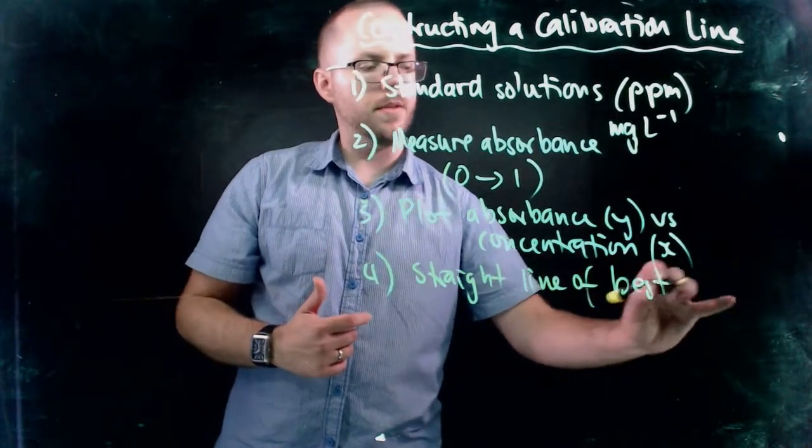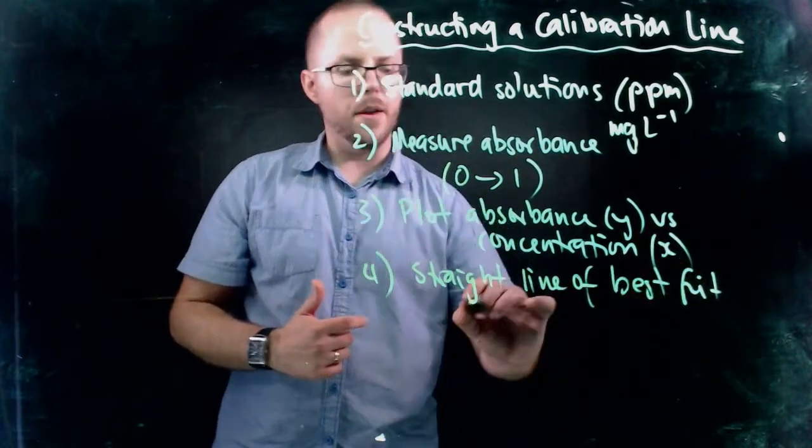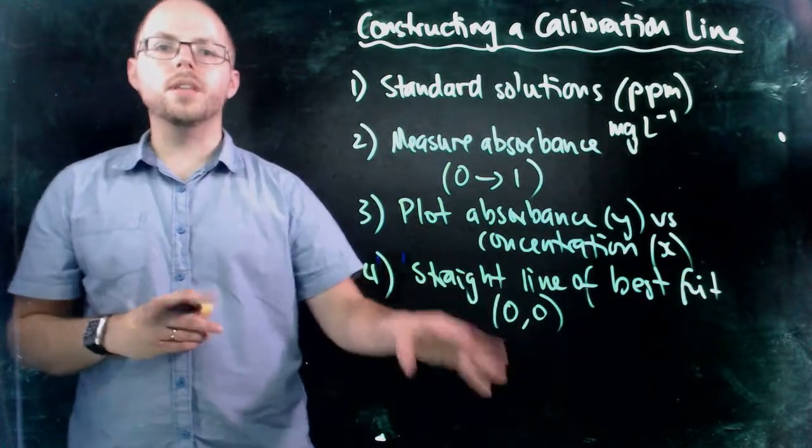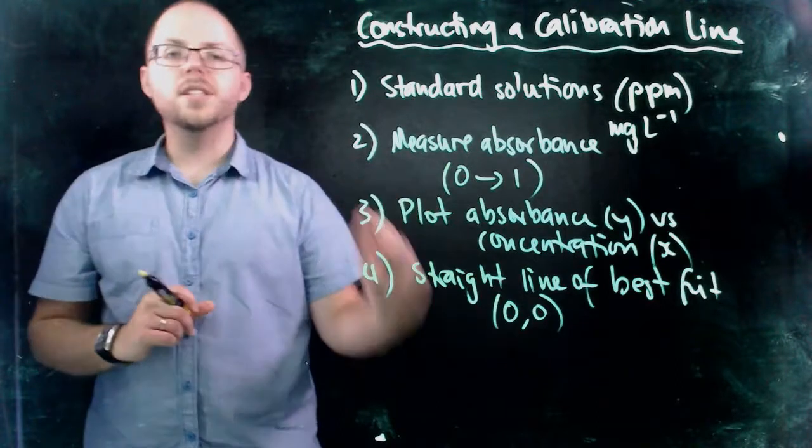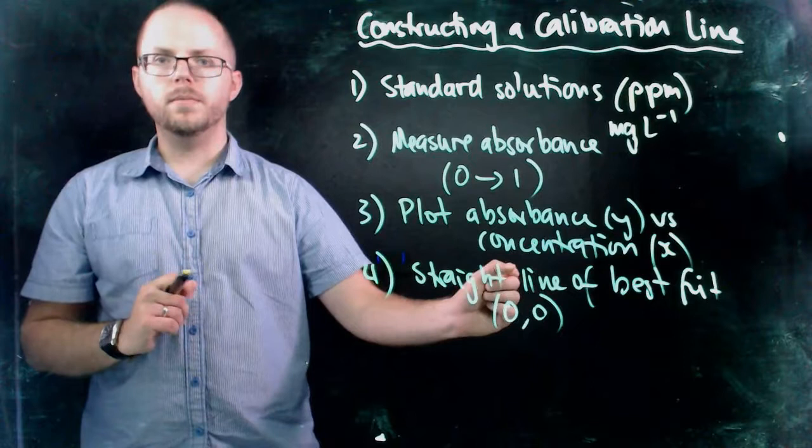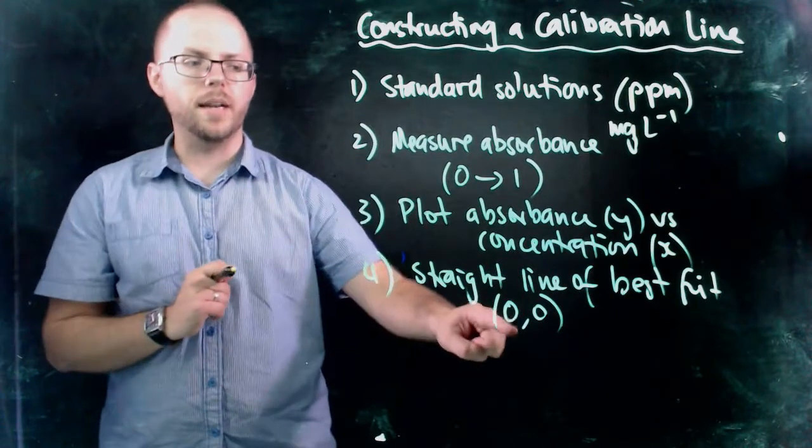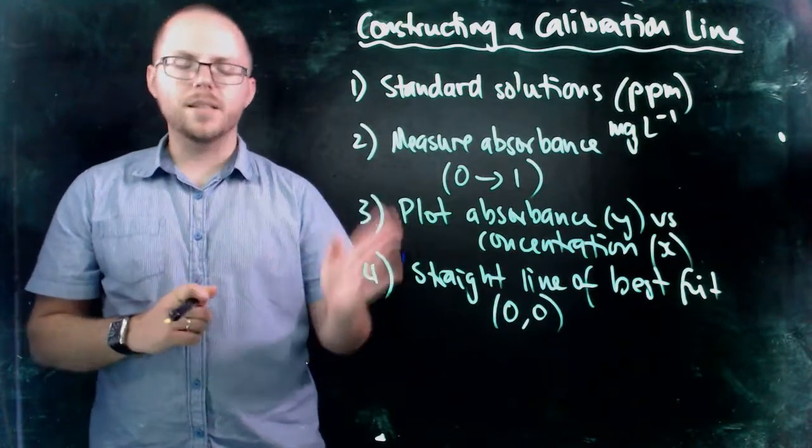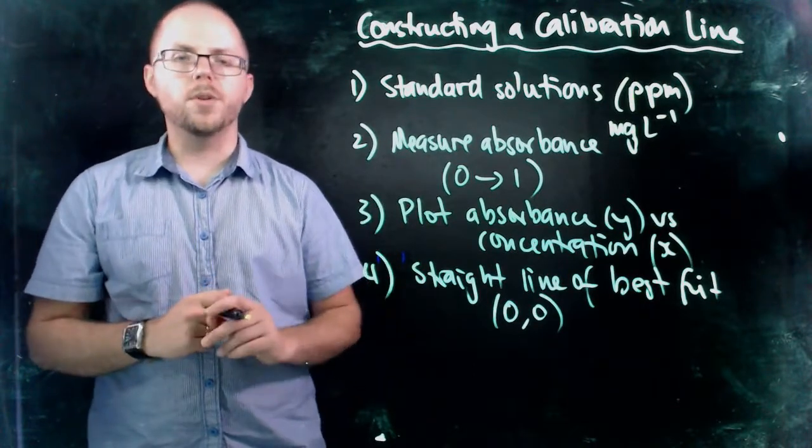So a straight line of best fit that passes through the origin of 0,0. Because from here, this is an important concept point, that if we have zero concentration of our sample, we should have zero absorbance. So it's logical for our line to start at 0,0 and pass evenly through all of our data points, and that's the line that we're going to use for all of our subsequent measurements.